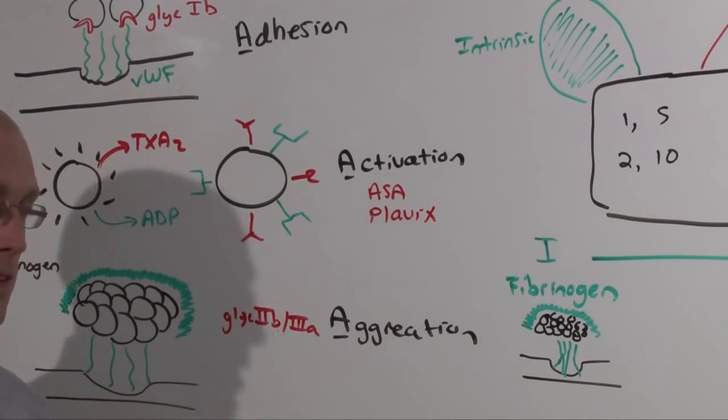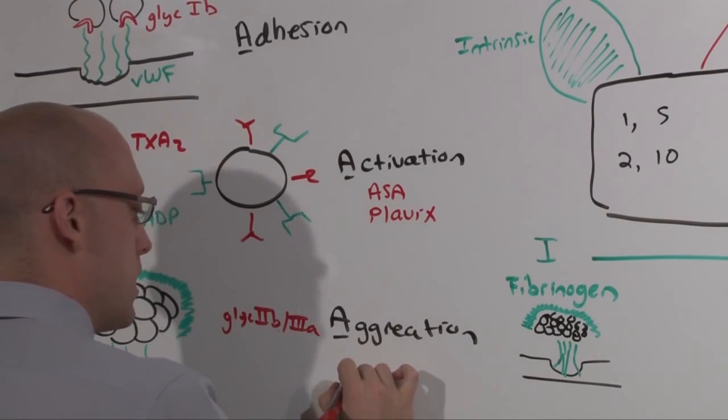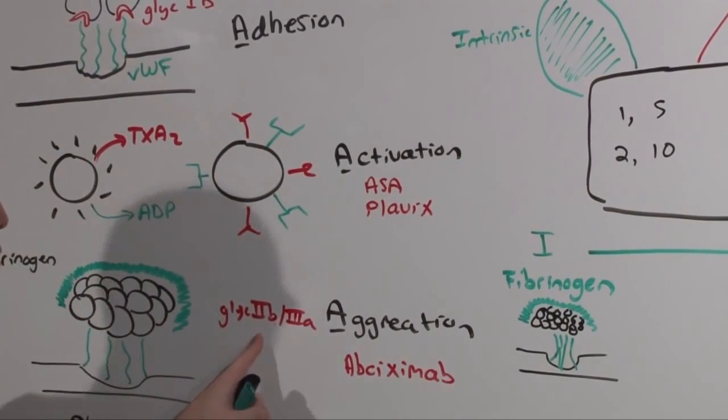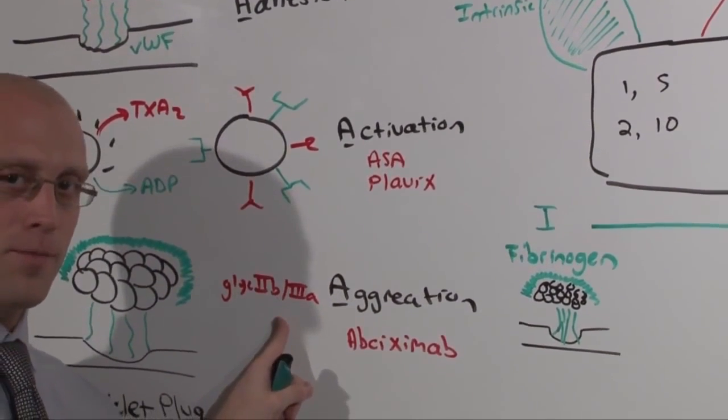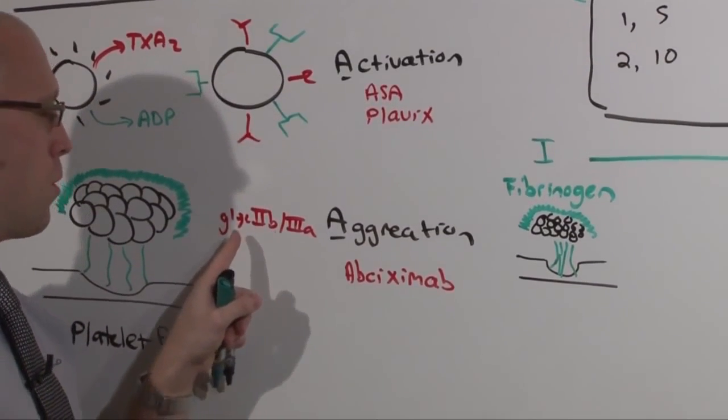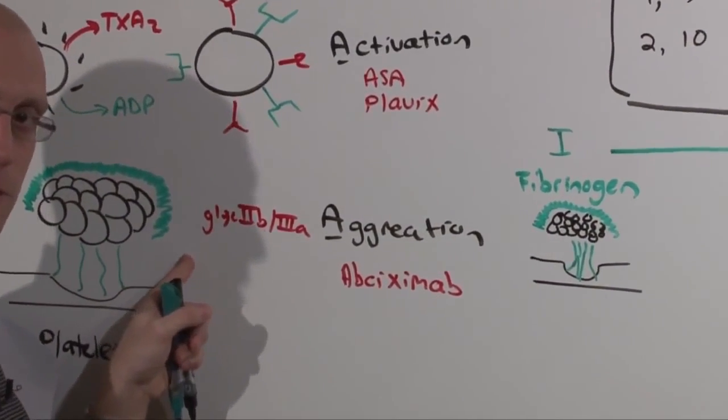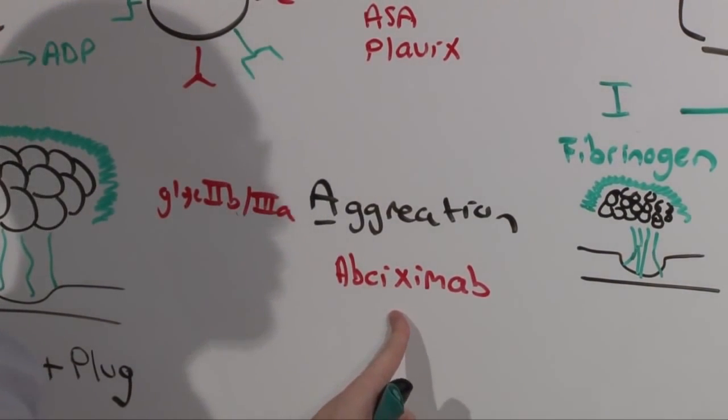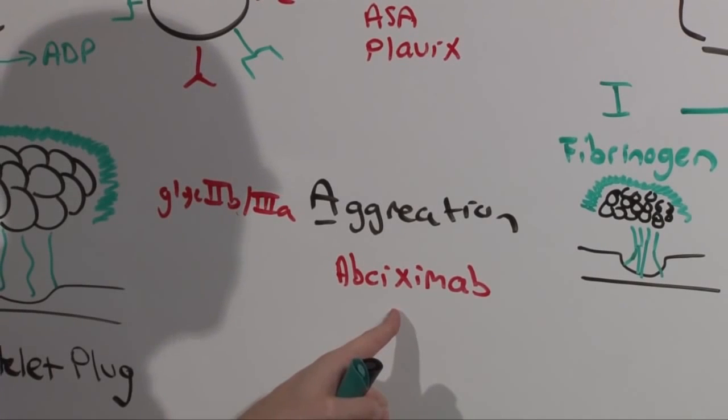Not surprisingly then, the risk of giving someone aspirin and plavix increases the bleeding risk because you prevent the formation of a platelet plug. Other medications do this. For example, abciximab, which is a glycoprotein 2b3a inhibitor. Glycoprotein 2b3a inhibitors prevent aggregation. Same thing, platelet plug can't form. This medication happens to be infused and is only used during coronary interventions. But some disease states can do this as well.